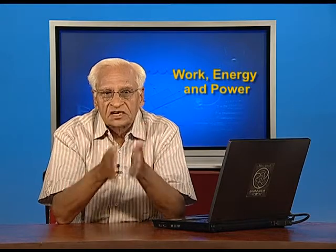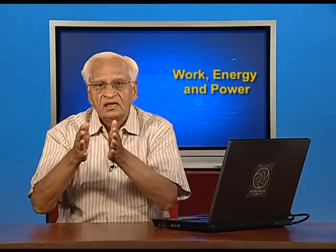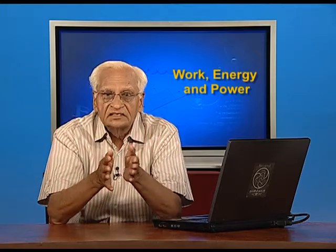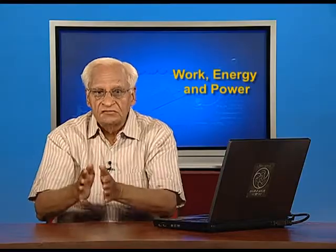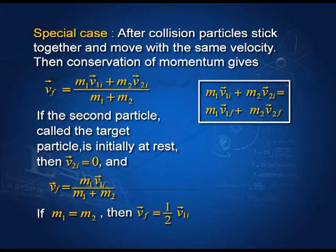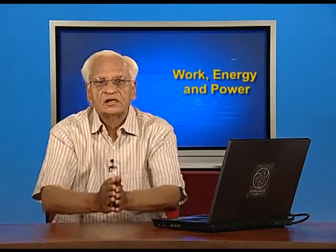If a system is isolated, the two particles have certain momentum before collision and the same total momentum after collision. Here you can see two bogies of a train with momenta m₁v₁ and m₂v₂ before collision. After collision, if the two join together, their momentum is (m₁ + m₂)v, where v is their common velocity. Momentum before collision equals momentum after collision. This is the case of particles which stick together — they collide and then move as one particle.